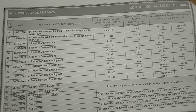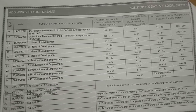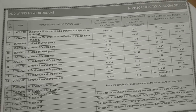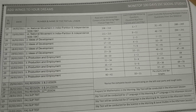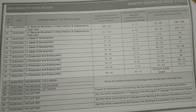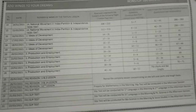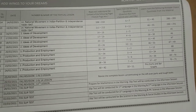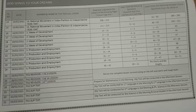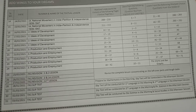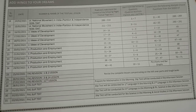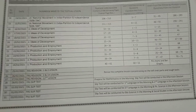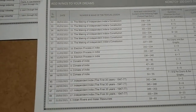From day 16, we have 4 days for lesson 2, 'Ideas of Development'. After that, we have a 5-day plan for lesson 3, 'Production and Employment'. Then we have FA-1 Revision starting from 25th February, with 3 days for revision, followed by the FA-1 Slip Test.